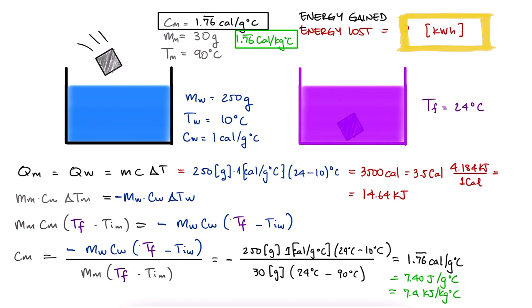Since kilowatt hours is a kilowatt, a measure of power, constantly running for an hour, we can write kilowatts as kilojoules per second and an hour as 3600 seconds. Therefore, a kilowatt hour is equal to 3600 kilojoules. The heat that the metal lost, 14.64 kilojoules, can therefore be written as 4.07 times 10 to the minus 3 kilowatt hours.